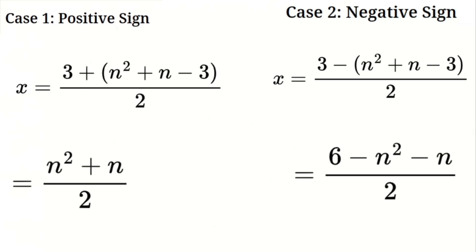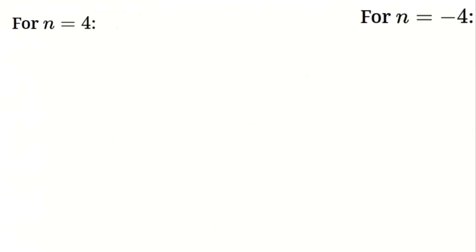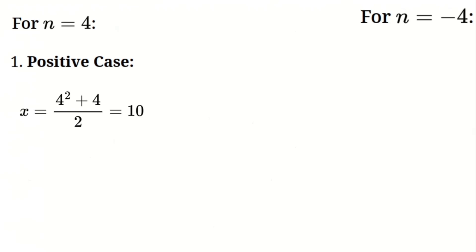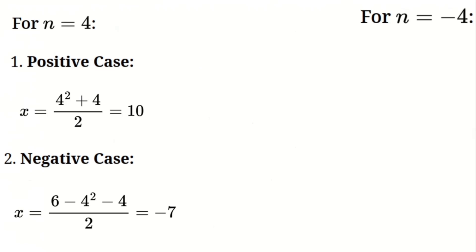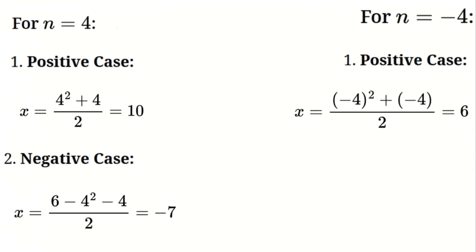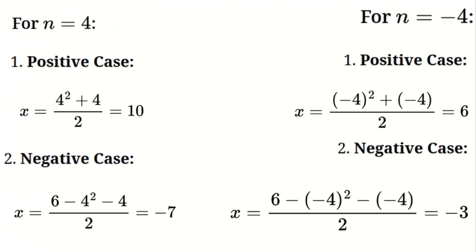And there you have it — we've derived the formula for the sum of the first n natural numbers using a unique approach. Now let's test our formulas with n equals 4 and n equals negative 4. For n equals 4: positive case gives x equals (4² plus 4) divided by 2, which equals 10; negative case gives x equals (6 minus 4² minus 4) divided by 2, which equals negative 7. For n equals negative 4: positive case gives x equals ((-4)² plus (-4)) divided by 2, which equals 6; negative case gives x equals (6 minus (-4)² minus (-4)) divided by 2, which equals negative 3.